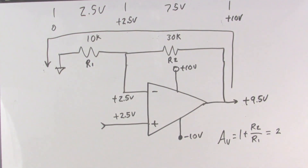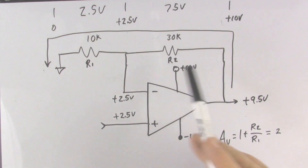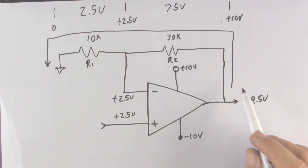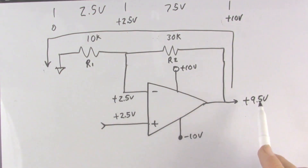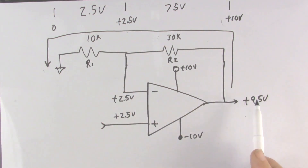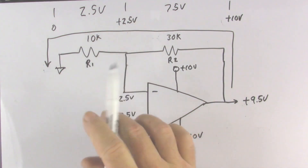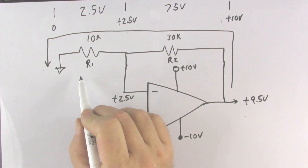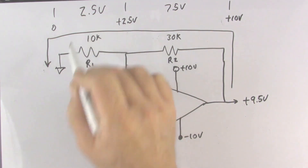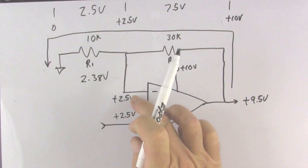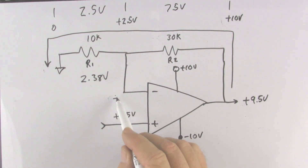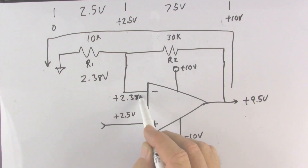What's that going to do to our circuit? It's going to unbalance the entire thing. At 9.5 volts output, with a 3-to-1 ratio, we divide that number by 4, which gives us only about 2.38 volts across the lower resistor here — instead of the needed 2.5 volts.